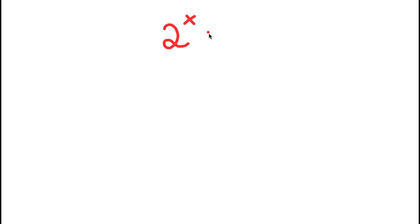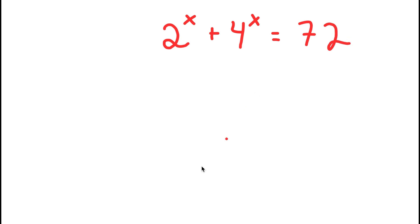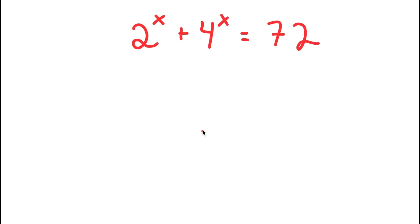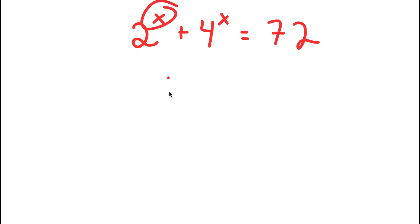In this equation, I have 2 to the power of x plus 4 to the power of x is equal to 72. My only variable in this equation is x, so that's what I'm going to be solving for.